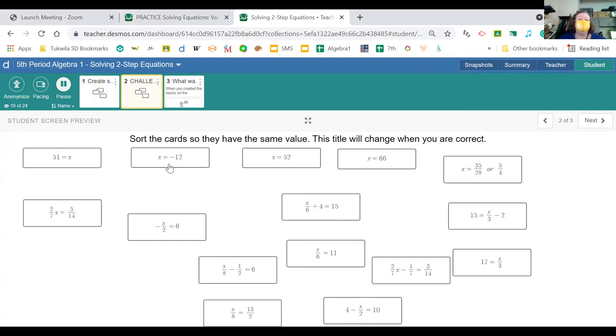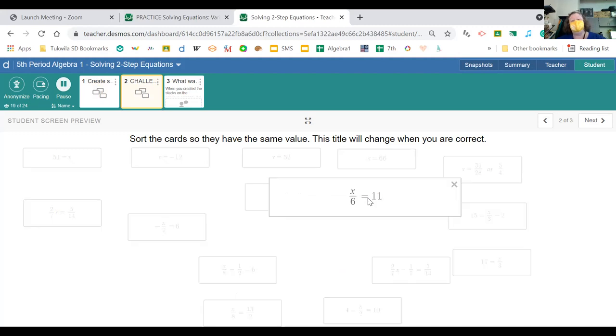Fifty-one equals x, x equals negative twelve, x equals fifty-two, and x equals sixty-six. Then I realized that these were probably answer cards. After doing the first slide, I realized that three or four cards were going together. So when I look, I see this one here that says x divided by six plus four equals fifteen. And then I also see this one here that says x divided by six equals eleven. I'm realizing when I'm looking at those two that they both have x over six, and so I'm wondering if they're related to each other.